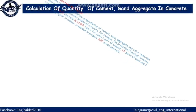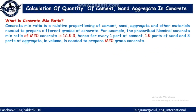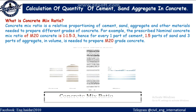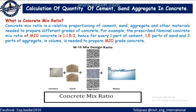What is Concrete Mix Ratio? Concrete Mix Ratio is a relative proportioning of cement, sand, aggregate and other materials needed to prepare different grades of concrete. For example, the prescribed nominal concrete mix ratio of M20 concrete is 1:1.5:3 — hence for every 1 part of cement, 1.5 parts of sand and 3 parts of aggregate by volume is needed to prepare M20 grade concrete.